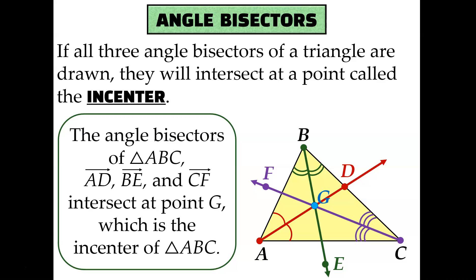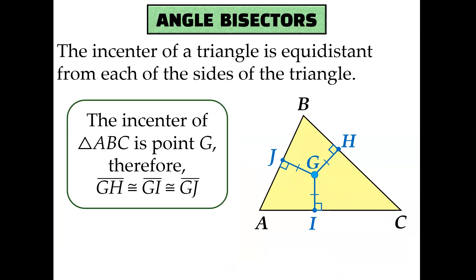Point G in this diagram is the incenter of triangle ABC because it's the point where all three angle bisectors intersect. Remember that the circumcenter — the point of concurrency for perpendicular bisectors — is equidistant from the vertices of the triangle. Angle bisectors, however, intersect at the incenter, and the incenter is equidistant from the sides of the triangle. The shortest distance from a point to a line is a perpendicular distance, which is why you see right-angle markings — the shortest distance from G to side AB is a line perpendicular to that side. JG, HG, and IG are all equal distances from G.